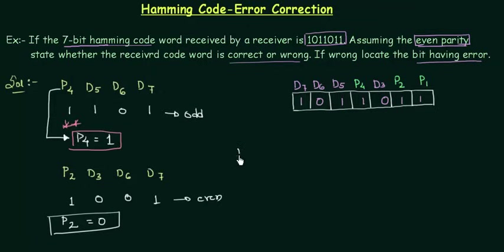Now we will check for the last parity bit P1. P1 is associated with your D3, D5, D7. P1 is 1 given in the question. D3 is 0, D5 is 1, and D7 is 1. Again you can see there are in total 3 ones and 3 ones is odd. So there is a contradiction. So I will make P1 equal to 1. So this is all that we need to do.